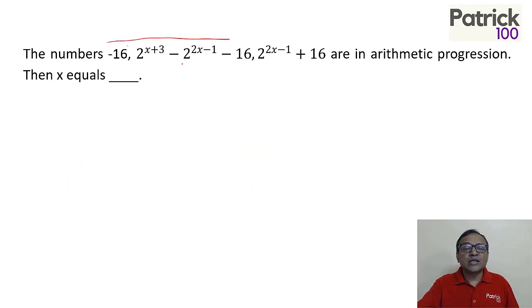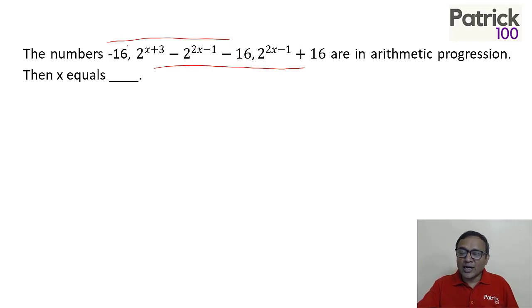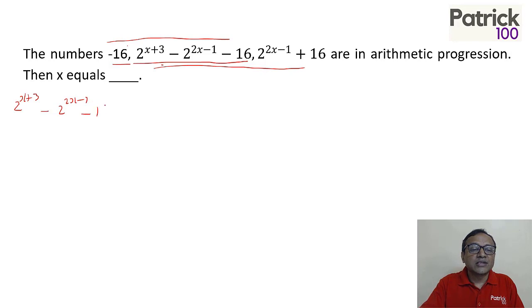Now arithmetic progression — the difference between two consecutive terms is equal. Two ways of solving: you can substitute values of x and figure out where the difference will be the same. If I subtract the first term minus the second term, I get 2^(x+3) minus 2^(2x) minus 1 minus 16.